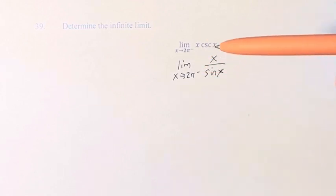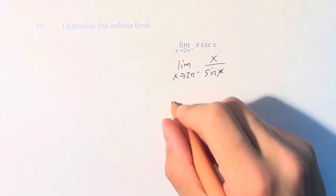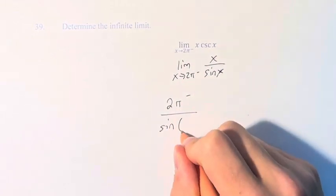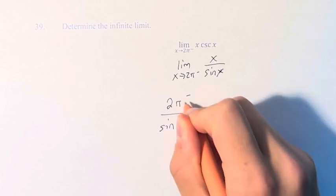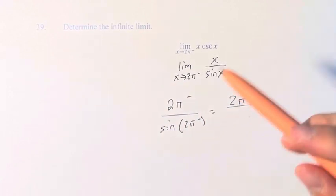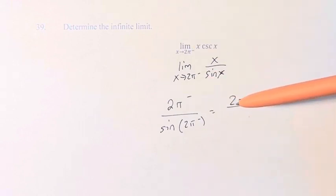Now, what is the value when we plug this in? Well, this is approaching 2π from the left over sine of approaching 2π from the left. This is just going to be 2π, since there's no other function involved. And whether we're approaching 2π from the left or the right doesn't actually change the function.